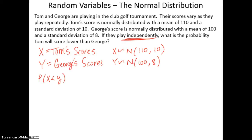Now we actually don't have formulas, or we don't know how to say one random variable is less than another. But what we do know is how to combine two random variables. So if we subtract Y from both sides, we can figure out the probability that Tom's score minus George's score is less than 0.